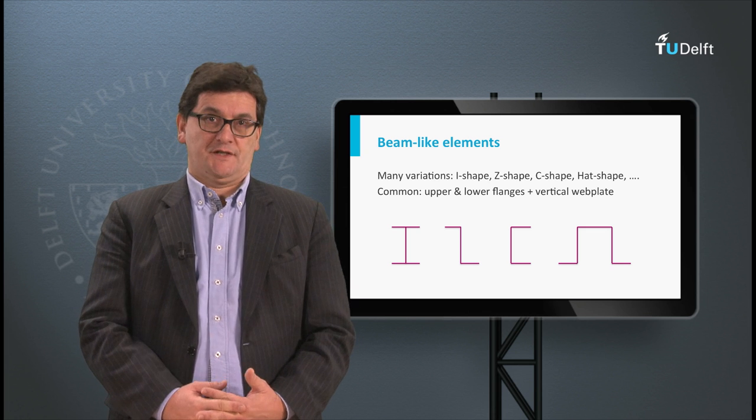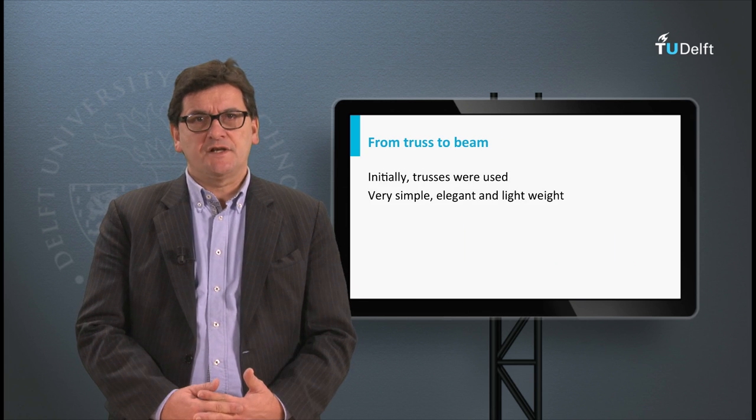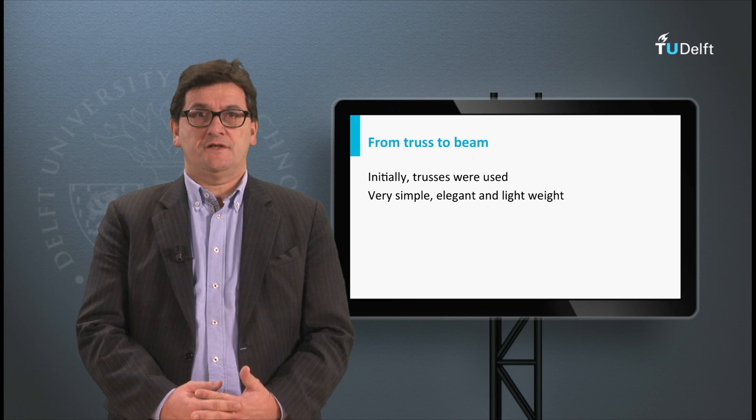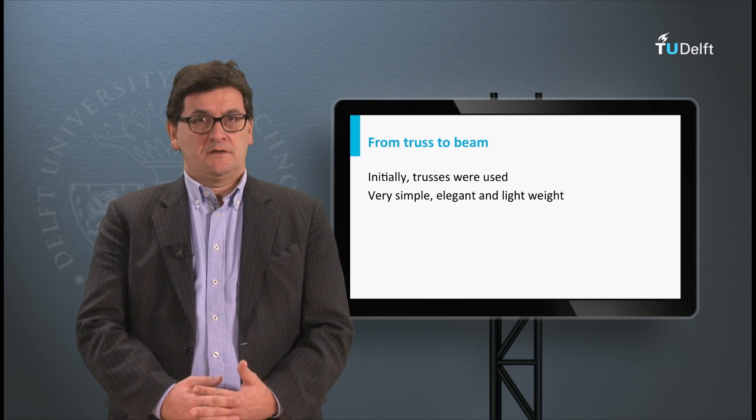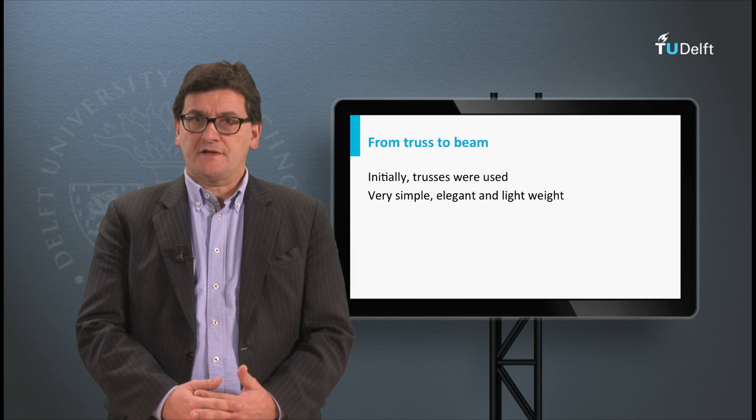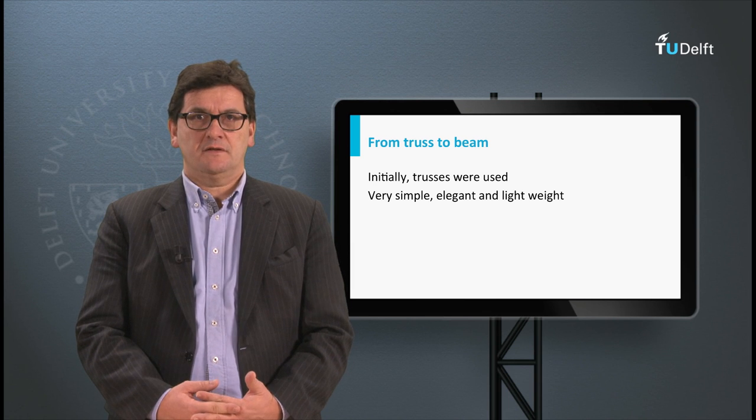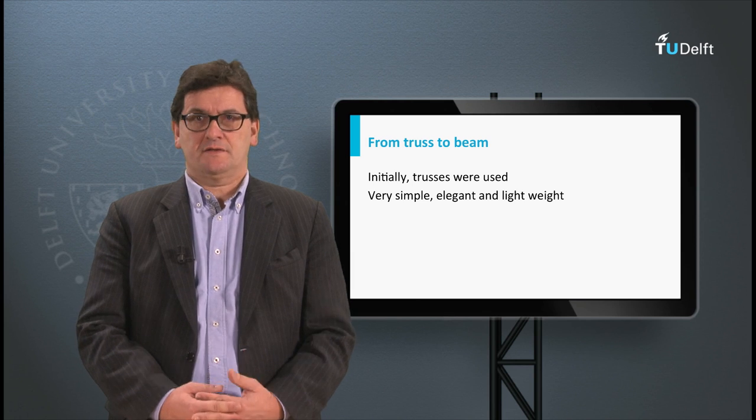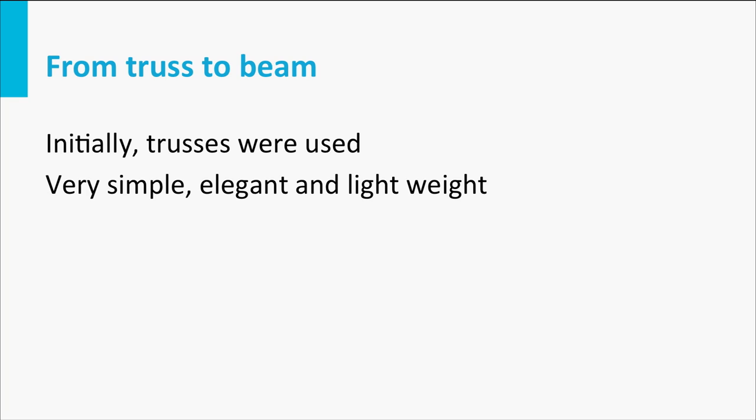Let's first go back to trusses. In the previous lecture we have seen that in the early days of aviation truss structures were used. Those structures were easy to manufacture, elegant, and had a low weight. A truss structure can also be regarded as a beam-like element. I will explain that in this lecture.